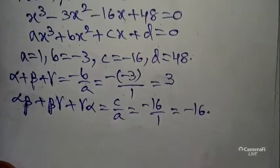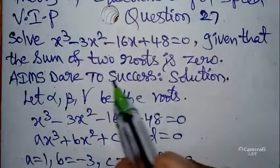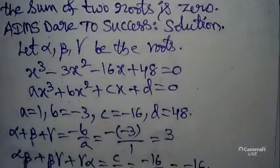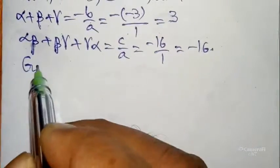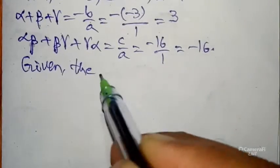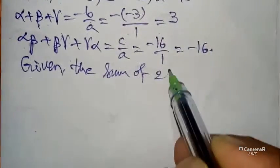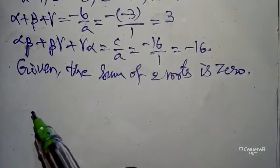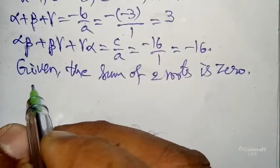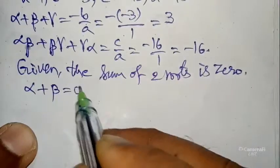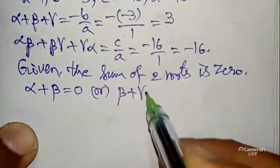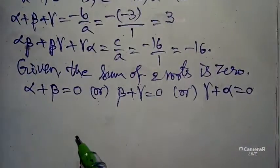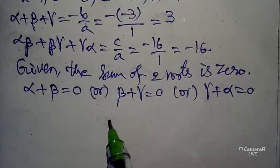Now, the given condition is that the sum of two roots is zero. We have three roots alpha, beta, gamma. So we can take alpha + beta = 0, or beta + gamma = 0, or gamma + alpha = 0. Take any one of these.